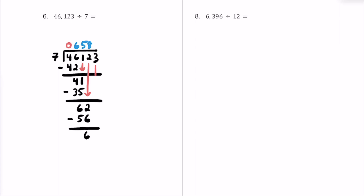Let's bring down this 3 — it's now 63 at the bottom. How many times does 7 fit into 63? 7 times 10 is 70 which is too much, so let's do 7 times 9. 7 times 9 is exactly 63, so we have a remainder of 0. Our quotient here is going to be 6,589.